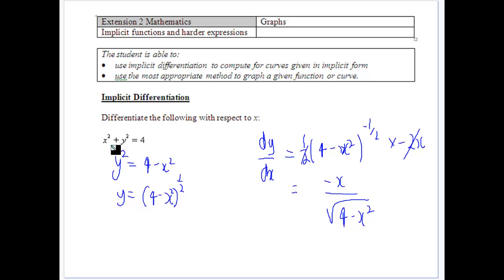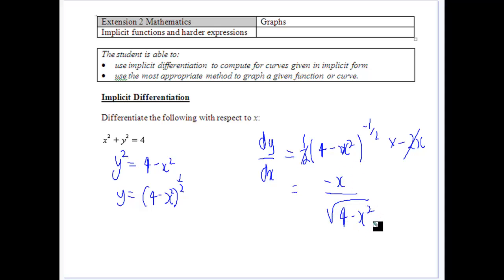Normally what we would do is rearrange it and get y equal to the square root of 4 minus x squared, differentiate that, and get dy/dx. So the derivative of y with respect to x would equal minus x over the square root of 4 minus x squared. That's a little bit of work to get there, but not beyond the level of this course.